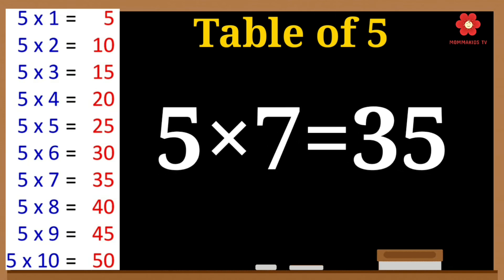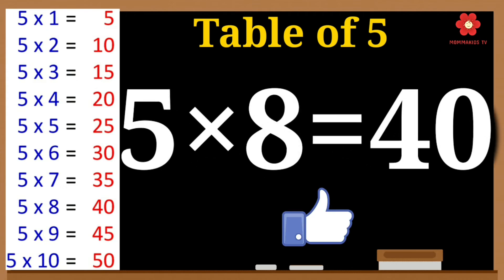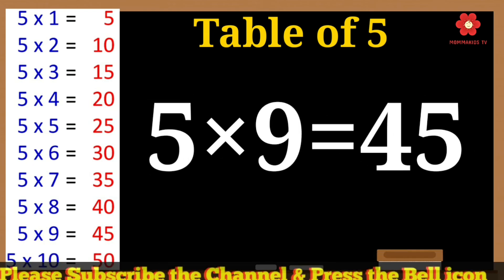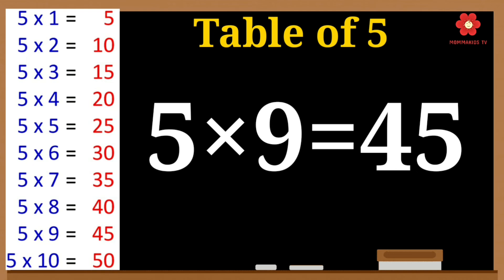Five sevens are thirty-five. Five eights are forty. Five nines are forty-five.